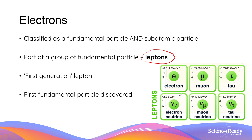In this diagram there are six leptons you need to know: electron, muon, tau, electron neutrino, muon neutrino, and tau neutrino. The electron and electron neutrino are your first-generation leptons, which are the most abundant. These are followed by the muon and its pair, the muon neutrino, which are your second-generation leptons.